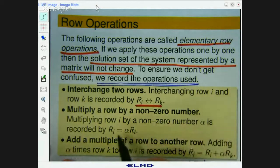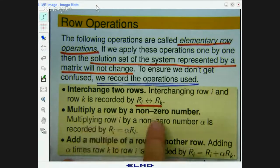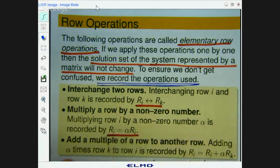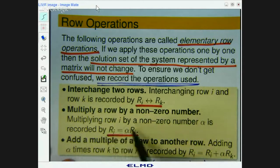You can multiply a row by a non-zero number alpha. And this is the way that you would record it. Row i equals alpha row i.